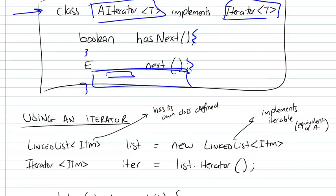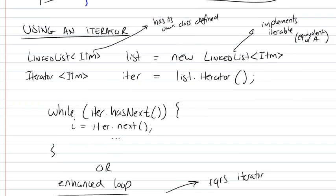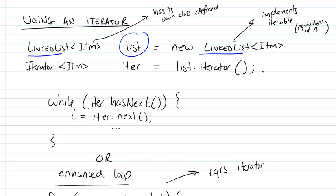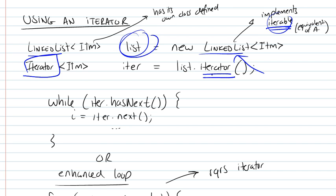Here's a concrete example. Suppose we have a linked list. A linked list actually implements iterable, and because of that it has to be able to return an iterator when you call its iterator function. So here we're having a list, calling iterator, it's returning an iter, and we're using it to step through the elements of the collection. We're first making sure that it has some elements to iterate over.